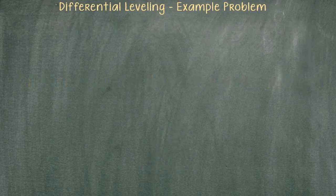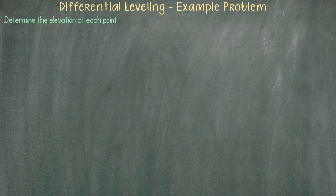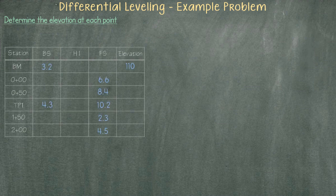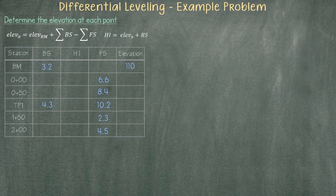On this occasion we're going to solve a problem for differential leveling. We are going to determine the elevation at each point using the given information. First we'll pull out the known equations that we can use to find the unknowns. I will start by finding the elevation at station zero plus zero zero and proceed in that order.